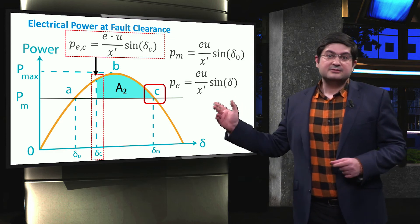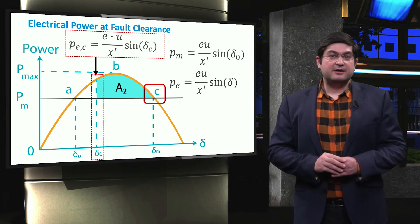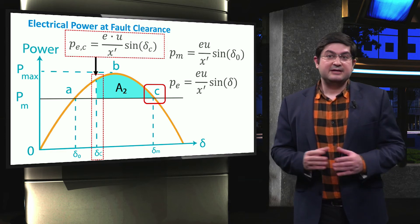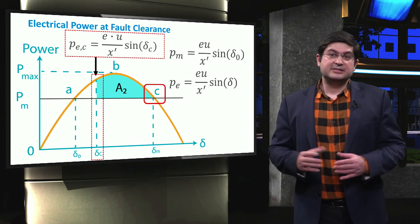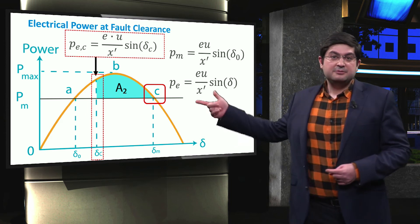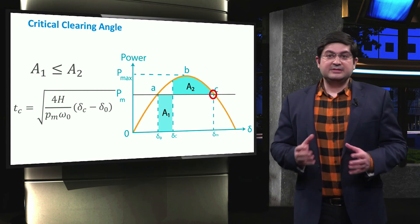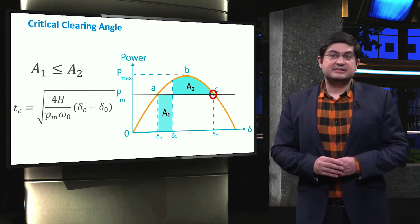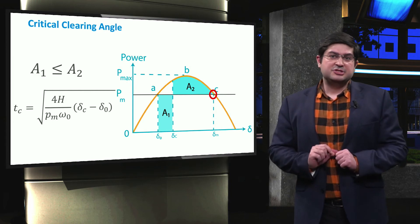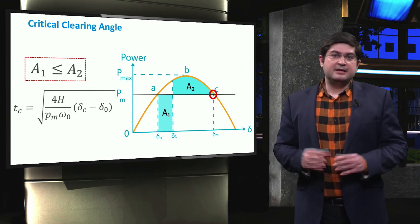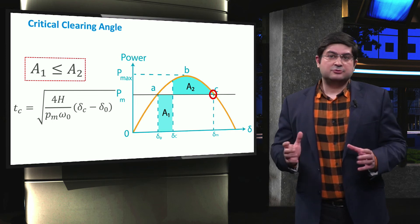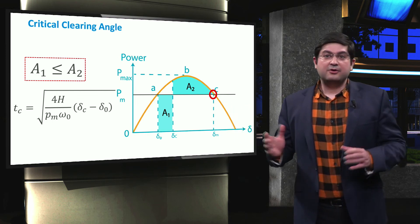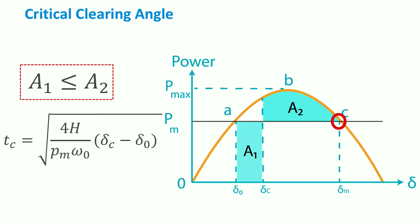Because after point C, at delta M, the input mechanical power becomes again greater than the electrical power. In this case, the rotor speed steadily increases and the machine becomes unstable. The main equilibrium criterion to keep the stability of these distributed generators based on electrical machines is that area A2 must be greater than or equal to area A1. In other words, the deceleration of the rotor in area A2 shall be large enough to cancel out the acceleration in area A1.